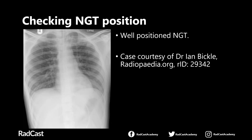Here we have a good example of a well-positioned nasogastric tube. Going through the checklist, you can say yes to each of the five points. The tube starts off in the midline passing vertically. When it reaches the carina, it doesn't follow the course of either the right or the left main bronchus — it bisects the carina and continues more or less in the midline until it deviates towards the left at the gastroesophageal junction, goes left into the stomach, and the tip is located within the stomach at least 10cm away from the gastroesophageal junction. This nasogastric tube is in a good position and safe to use.